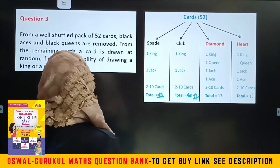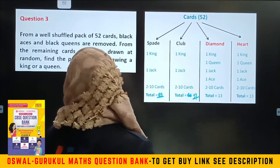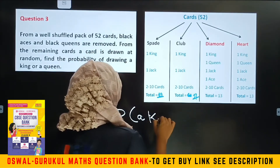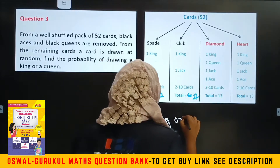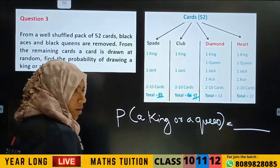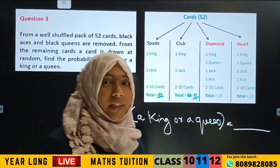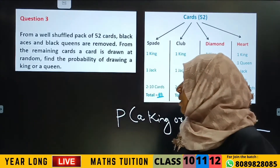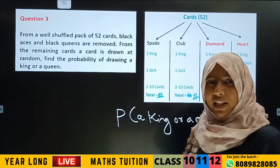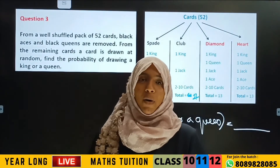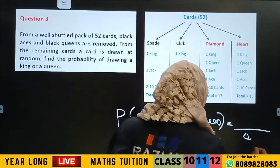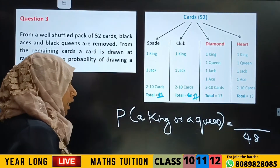From the remaining cards, a card is drawn at random. Find the probability of drawing a king or a queen. 4 cards are removed, so remaining cards are 48. The probability of getting a king or queen over 48.